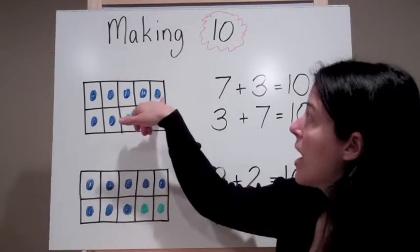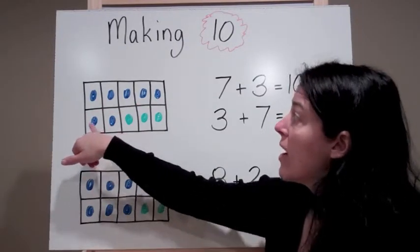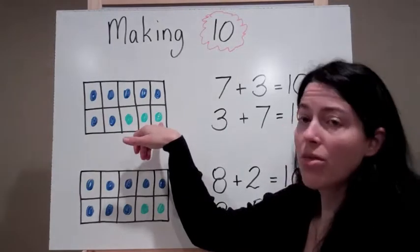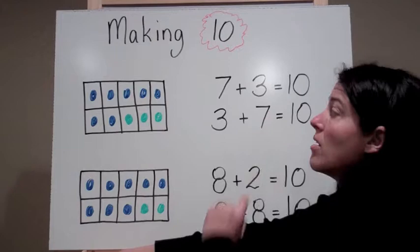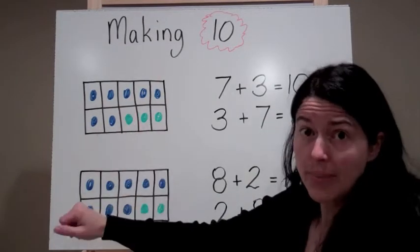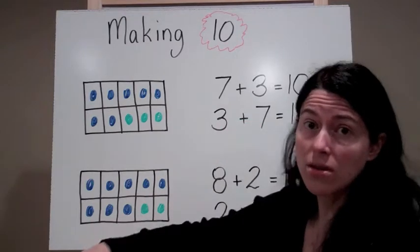In my next tens frame, I have a complete row of 5, 6, 7. So I have 7 and then 3 which tells me that 7 plus 3 equals 10. Now if I look at it in the opposite direction, I also can say 3 plus 7 equals 10.